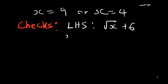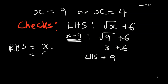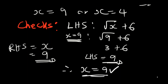For x = 9: the left-hand side is root of 9 plus 6. Using the positive root, that's 3 plus 6 = 9. The right-hand side equals x = 9. Since both sides equal 9, this confirms x = 9 is a valid solution.